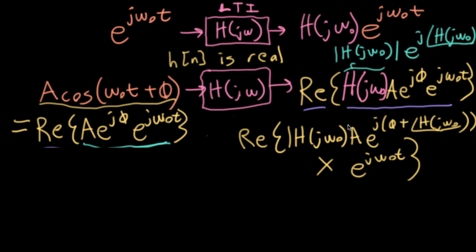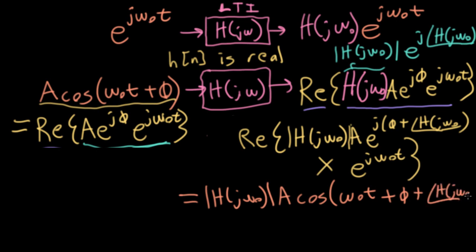Let me not forget to close the magnitude here. So when I take the real part of this complex exponential, I wind up with big H j omega naught magnitude times a cosine omega naught t plus phi plus angle of j omega naught.